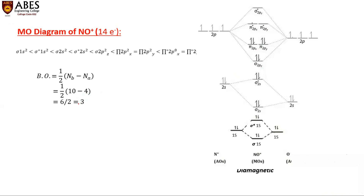Comparing NO and NO⁺: the bond order of NO⁺ (3) is greater than that of NO (2.5), so NO⁺ is more stable. Since bond order is inversely proportional to bond length, the bond length of NO is greater than that of NO⁺.